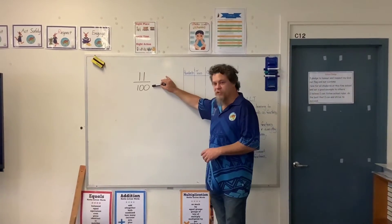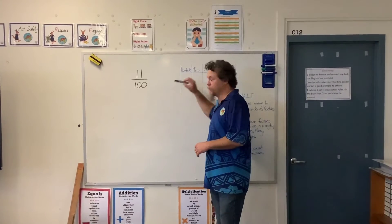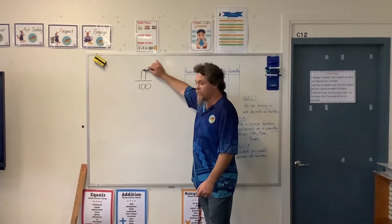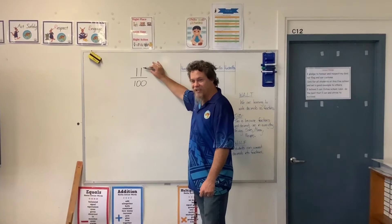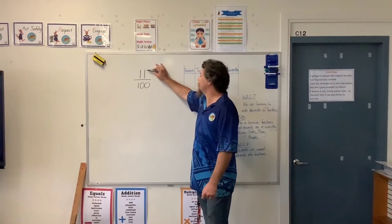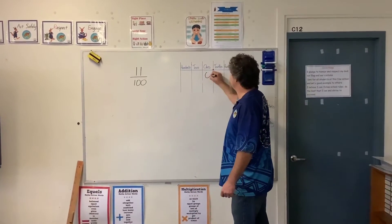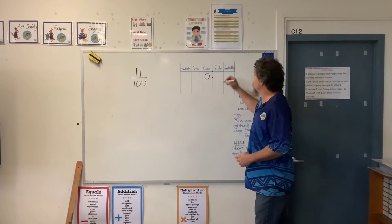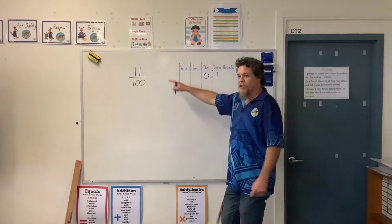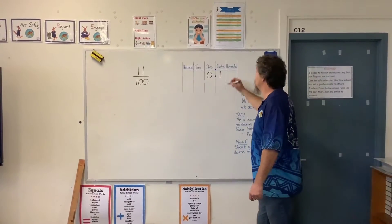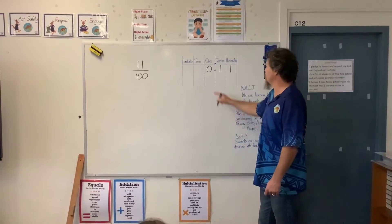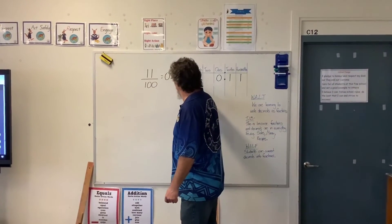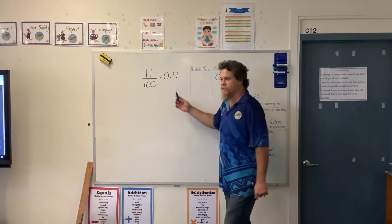When I have 11 hundredths written like this and I need to convert it to a decimal, I know that I have a one in the tenths column and a one in the hundredths column. I don't have any whole numbers yet, because we're still less than one. So my first one goes in the tenths, and this one goes in the hundredths column. So it becomes written like that — 0 and 11 hundredths.